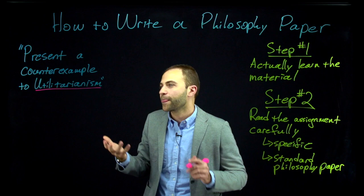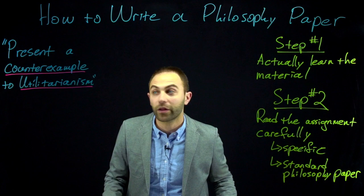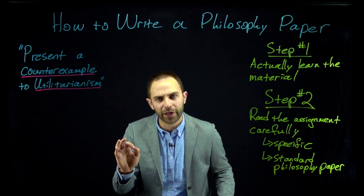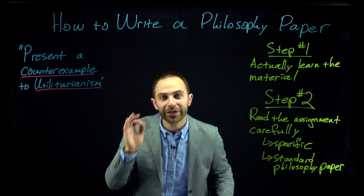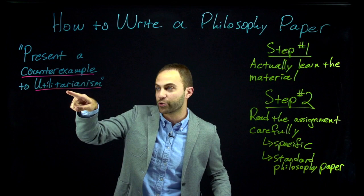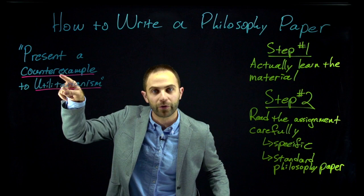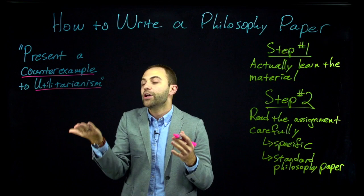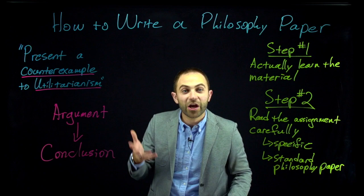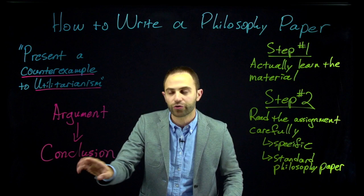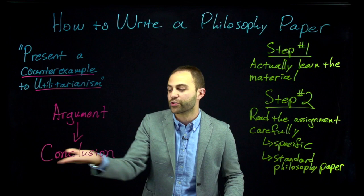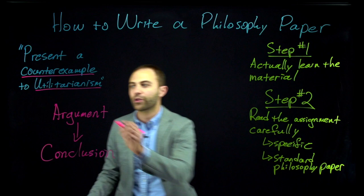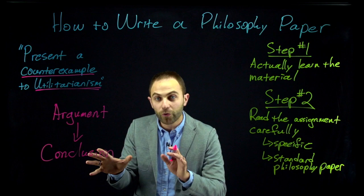What is a counterexample? You better figure that out before you start writing. A counterexample — and I have a longer video about this linked in the description — is a specific type of objection. You're going to present an objection to utilitarianism, but not just any objection: a counterexample. Make sure you're objecting to the theory itself. You may have read an argument in favor of utilitarianism, where utilitarianism is the conclusion. The prompt says to present a counterexample to utilitarianism, not to the argument in favor of it. Make sure the thing you're attacking is the theory itself.